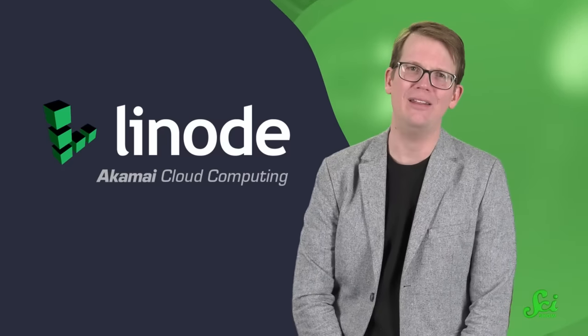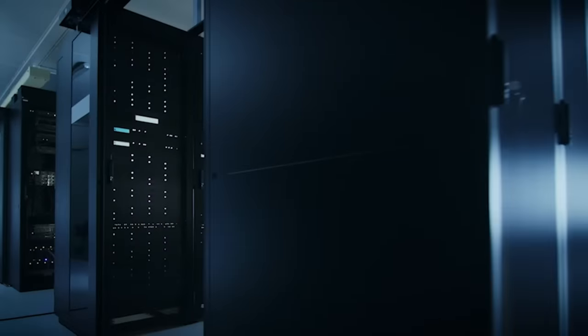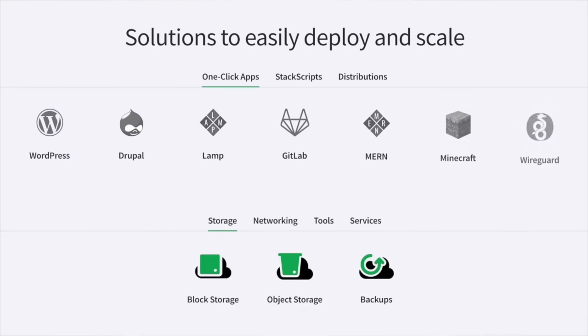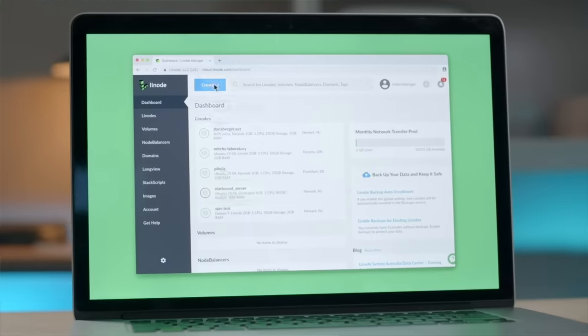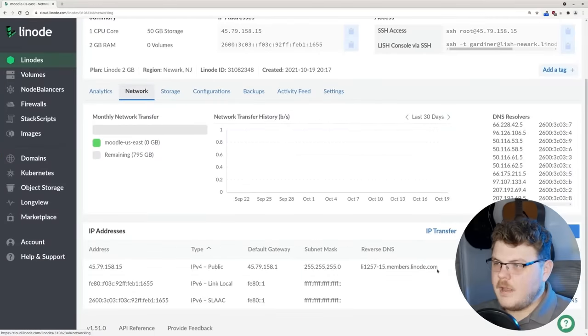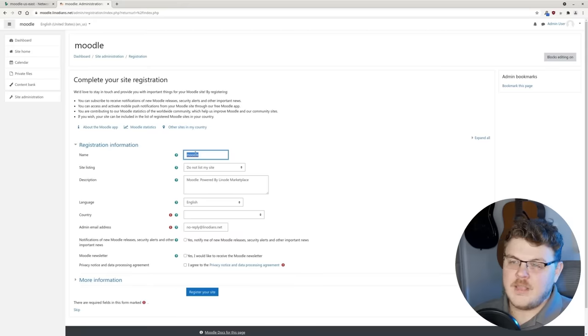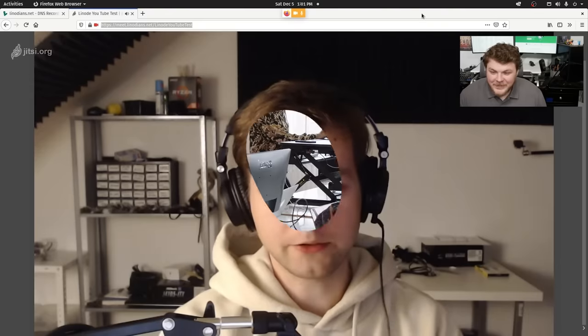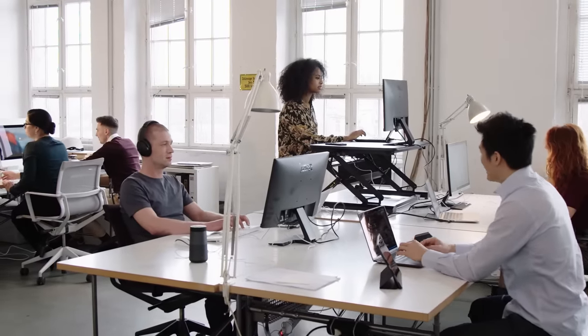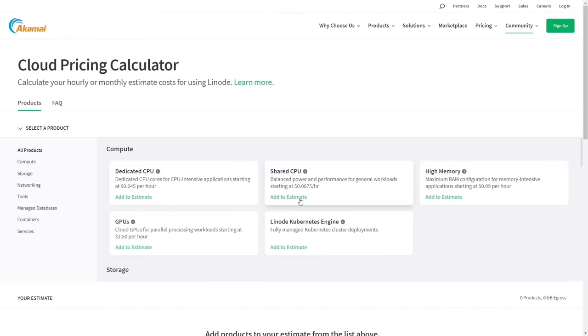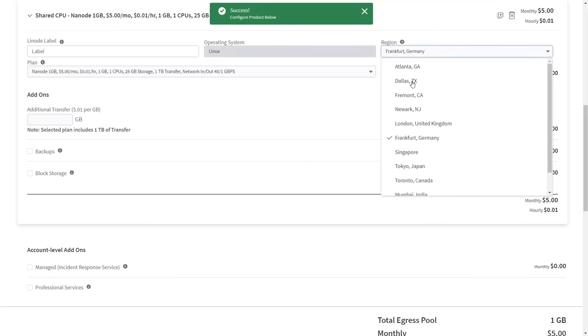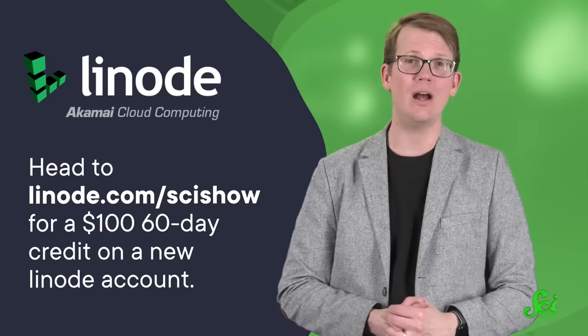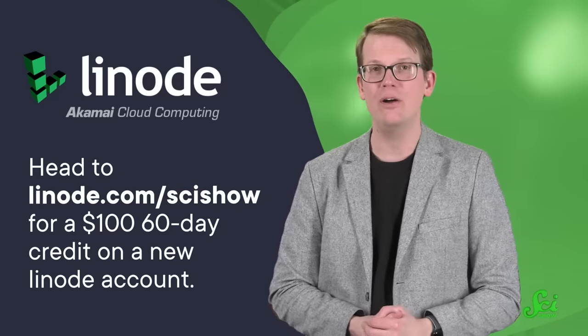This SciShow video is supported by Linode, a cloud computing company from Akamai. Linode provides you and your company with solutions for cloud computing, storage needs, databases, analytics, and all that fun stuff. Pretty much any company could find a way to ramp up their workflow with Linode. They have a variety of applications, like Moodle for the classroom, and Peppermint Ticket Management for the fulfillment center. Or, if you spend all day in online meetings, Linode has applications for video conferencing, too. It doesn't matter if you're a small business or just hired your thousandth employee, Linode's options scale with your business, so you only pay for what you need, and you can add extra capabilities when they suit your company. To get started with Linode, you can check out the link in the description down below, or go to linode.com/scishow for a $100, 60-day credit on a new Linode account.